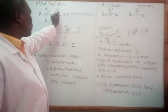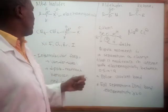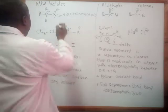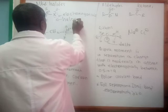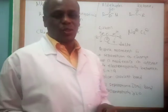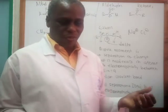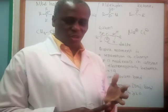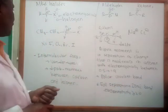For the alkyl halides, you've got the halogen group attached. For organic compounds in this course, we'll be focusing on just four halogens: fluorine, chlorine, bromine, and iodine — only those four halogens.